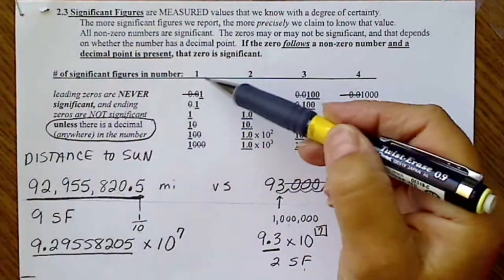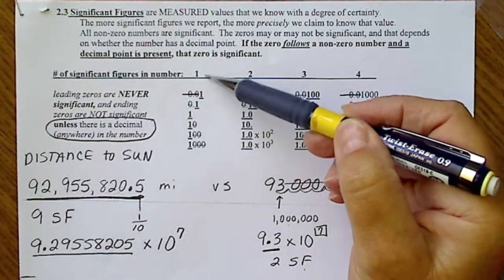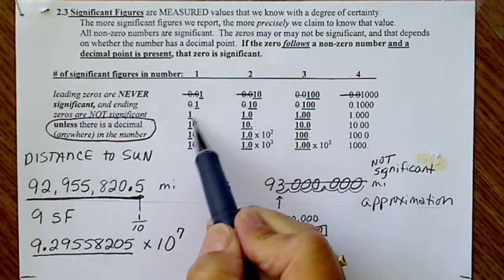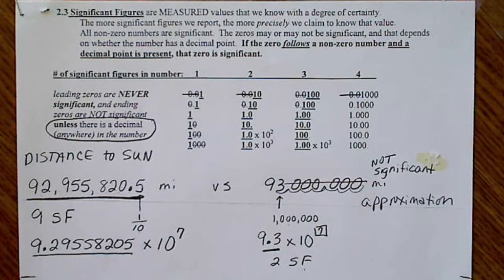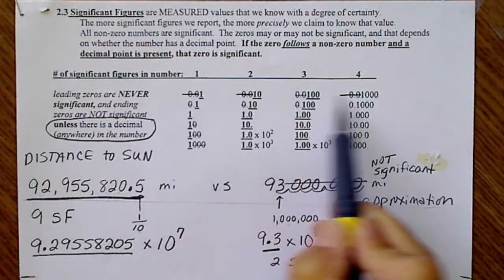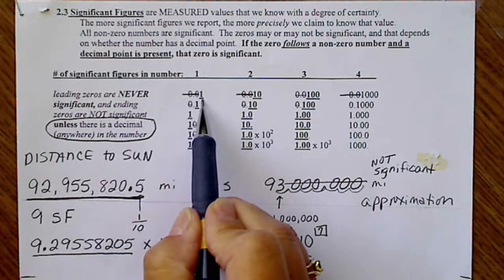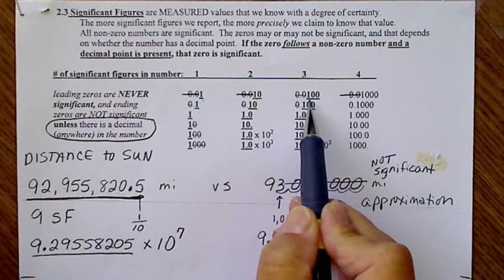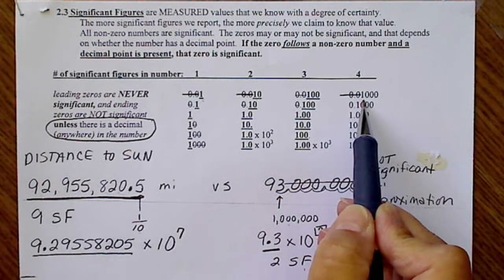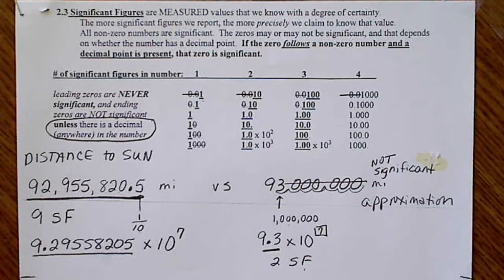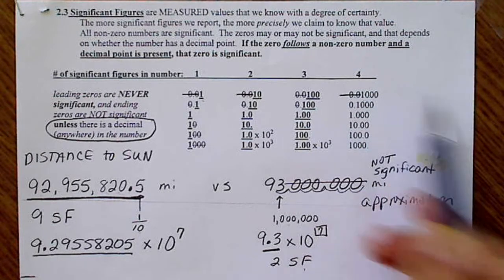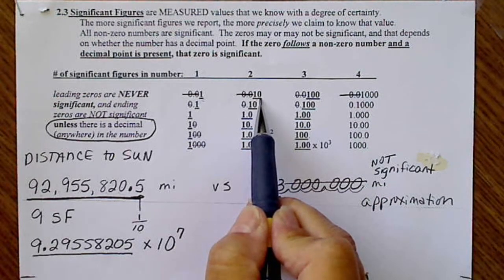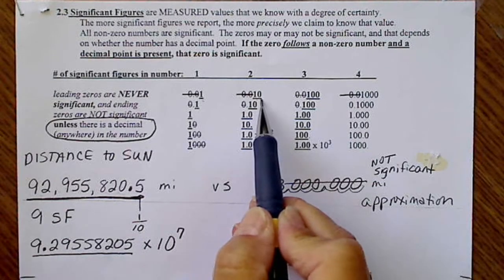So if we go down the column, every number in this column has one significant figure, and I'm always going to underline the significant figures. As we go across the table, the numerical value is the same, 0.01, 0.01, 0.01, and 0.01. But how well we know the measurement increases as we go across. So this zero is significant, basically because it's written.